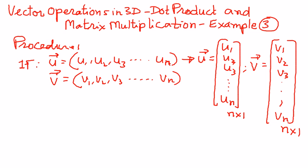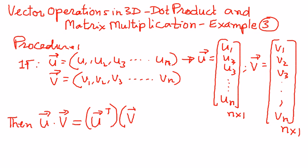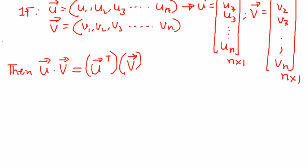Then, if that is the case, we can write vector u dot vector v as equal to vector u transpose times vector v. That is the definition. And therefore, when we implement this, u transpose is the transpose of the matrix — we take the column matrix and write it as a row matrix. So vector u is a column vector; when we transpose it, it becomes a row vector.